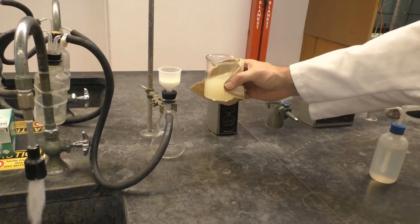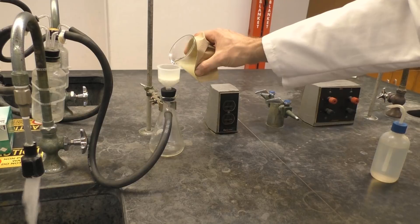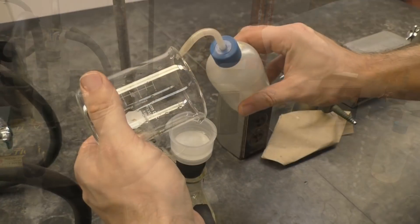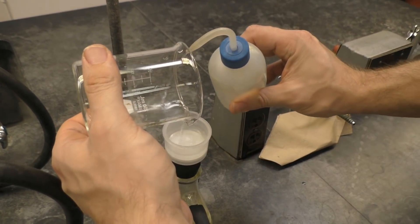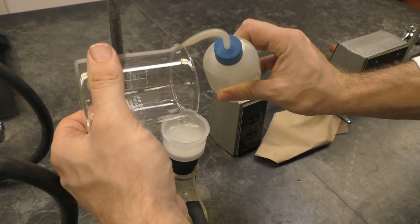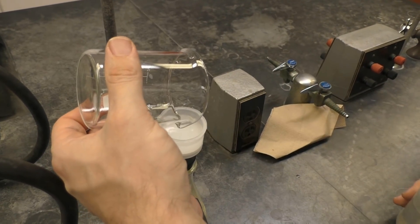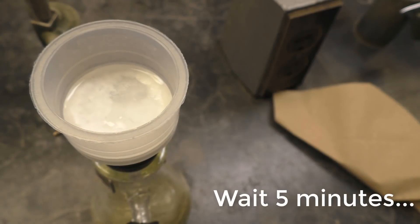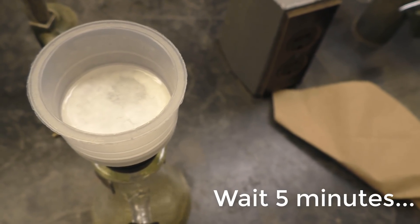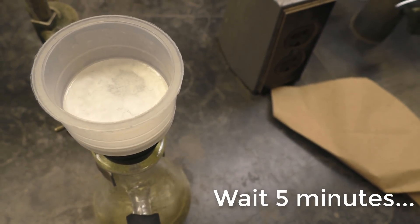You need to be sure and transfer your entire solution, so be sure to rinse the beaker with your squirt bottle filled with ice cold water. Repeat this until all of your precipitate has been transferred to the funnel. Now you need to make sure your precipitate is fully dry.